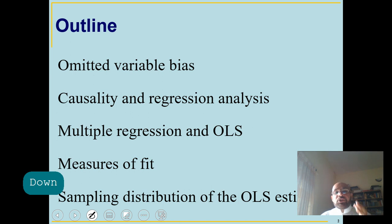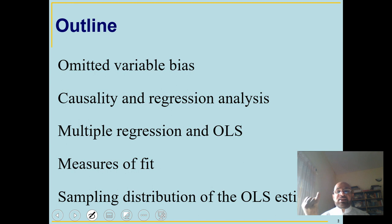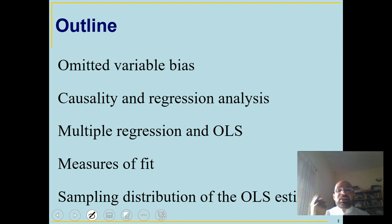The second thing is causality. In general, an econometric model has four objectives: first, summarizing data; second, forecasting analysis; third, causal analysis; and fourth, policy analysis. We will discuss causality in detail at some other stage.